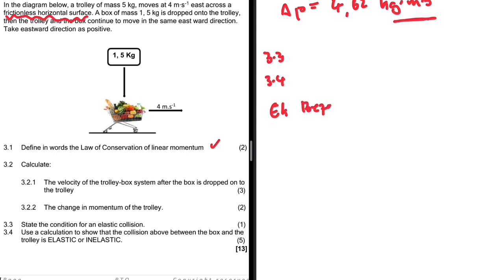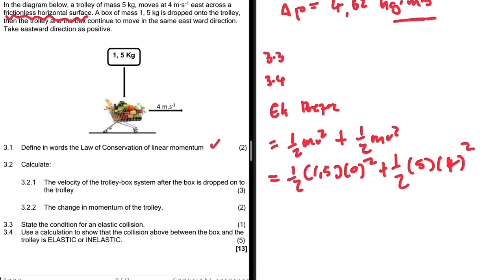EK before: the sum, so we're gonna have half m v squared for the box plus half m v squared for the trolley. So for the box, half m is 1.5, its v is 0 along the x-axis. And then half, the mass is 5 for the trolley, the velocity is 4, and we square that. Let me just put that in my calculator and see what I have. This is 40 joules.